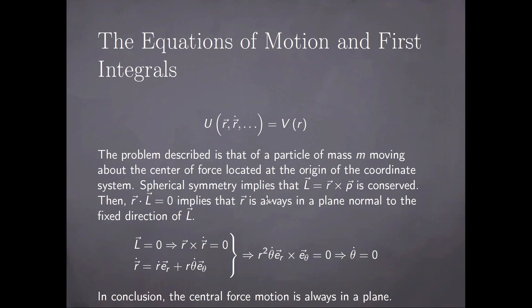Spherical symmetry implies that the orbital angular momentum is conserved. What follows is that the dot product between the relative radius vector and the angular momentum is zero, which implies that the relative vector is always in a plane normal to the fixed direction of the orbital angular momentum. This holds if the orbital angular momentum itself is non-vanishing. However, if it happens to be zero, then it follows that the radius vector has to be parallel with the velocity.